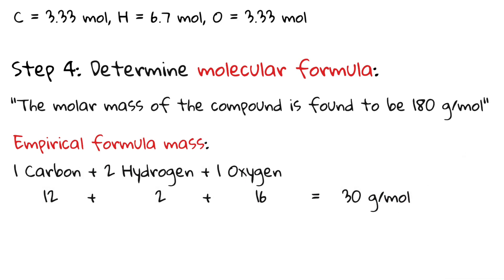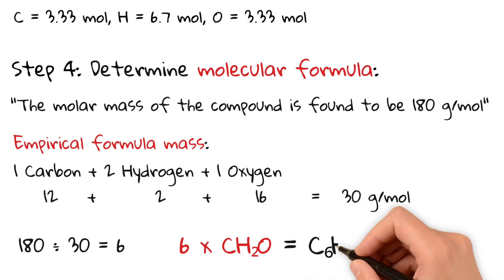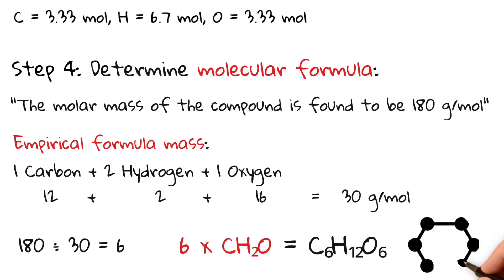Now we simply divide the molar mass by the empirical formula mass. 180 divided by 30 equals 6. This tells us that if we multiply our empirical formula by 6, we get the molar mass of 180. So therefore, our molecular formula is C6H12O6. That's glucose.